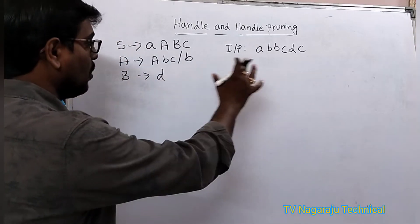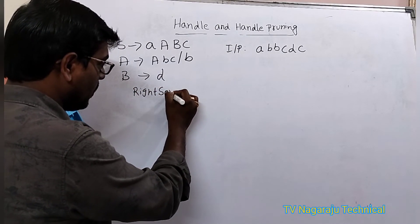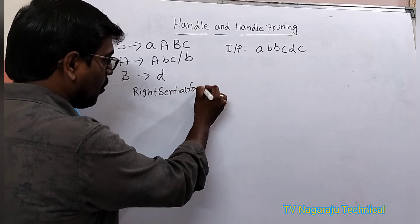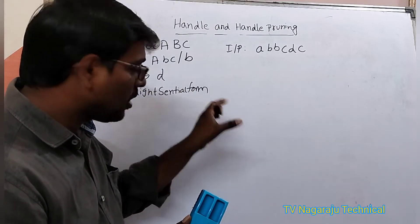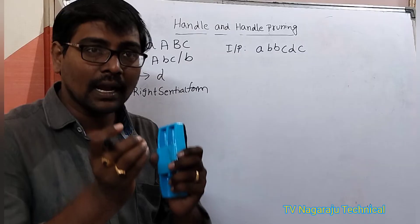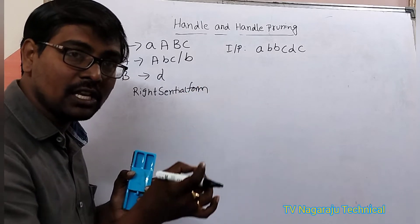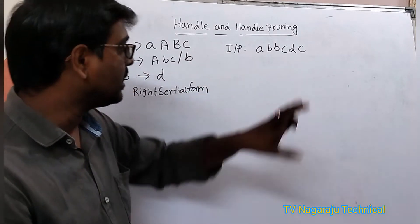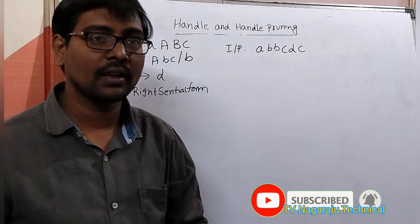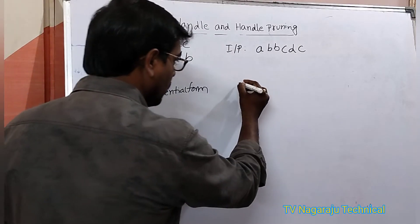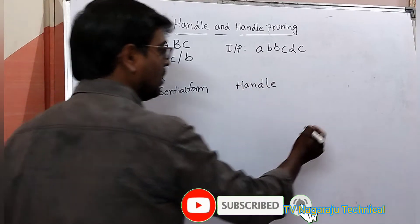Now I am constructing a table. The first column is the right sentinel form. The right sentinel form is simply a form that occurs in the rightmost derivation of a sentence. Whatever we get in this rightmost derivation is called the rightmost sentinel form. The second column is the handle, and the third is the replacing production.